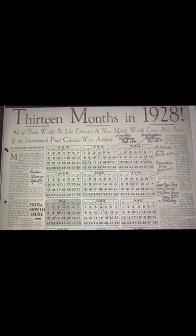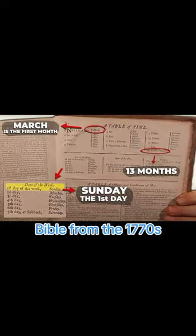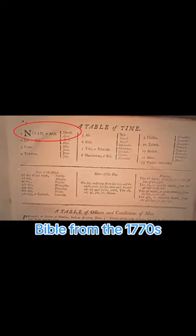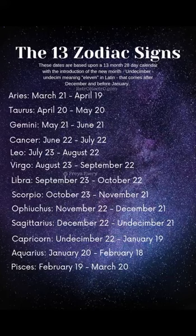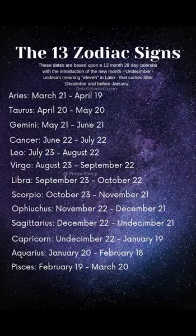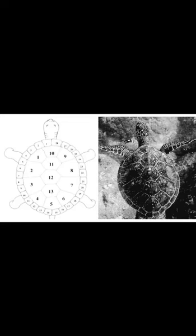This is why I've said the dates that they are giving us are incorrect. We used to have 13 months, 28 days, and one day of rest, even in the Bible. We have 13 lunar cycles, 28 days, 13 zodiac signs. Every turtle shell you'll find has 13 sections in the middle and 28 notches along the side — all to keep us disconnected from these natural cycles of our realm.